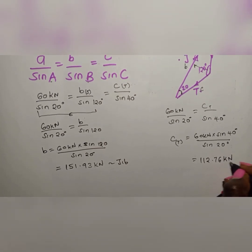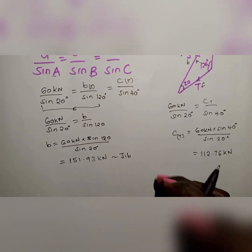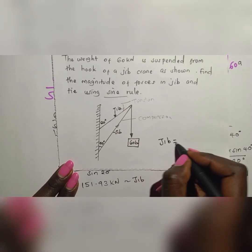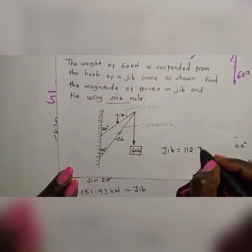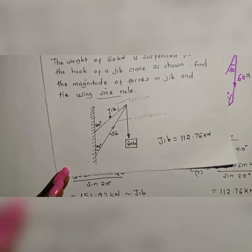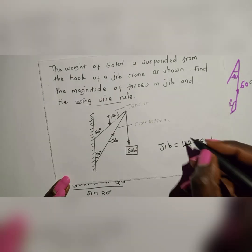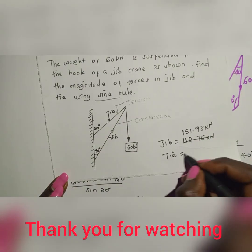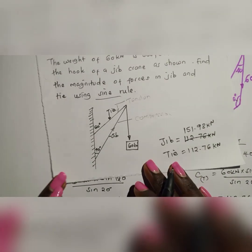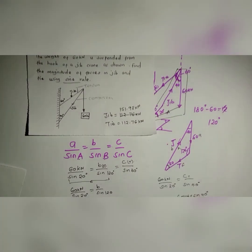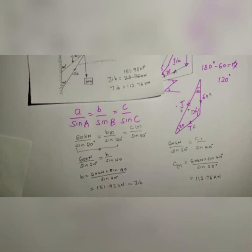It's a force, that's why we have it in kilo Newtons. We've now computed the magnitude of the jib: 151.93 kilo Newtons, and for the tie: 112.76 kilo Newtons. You can take your time and compute these questions on your own. That is the simplest method — that is the way to solve forces using the sine rule. Thank you for watching, subscribe for more.